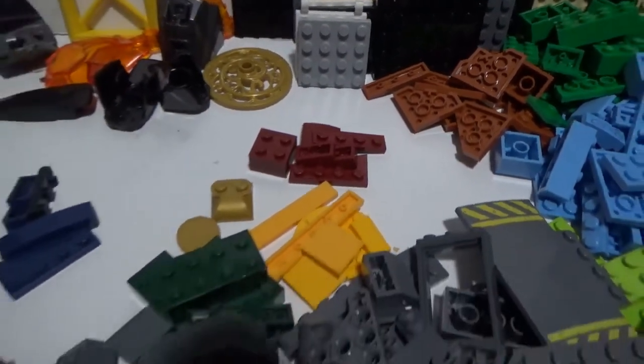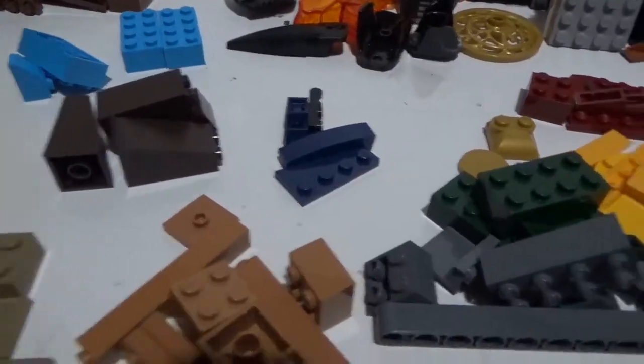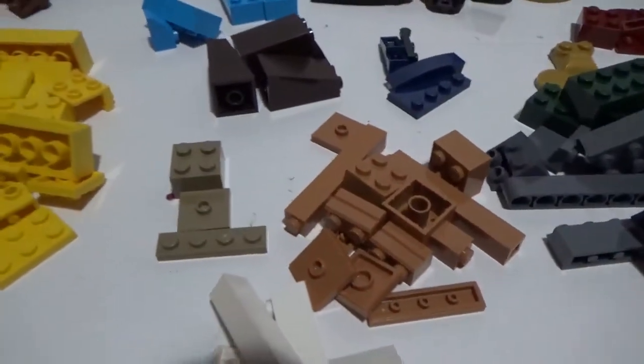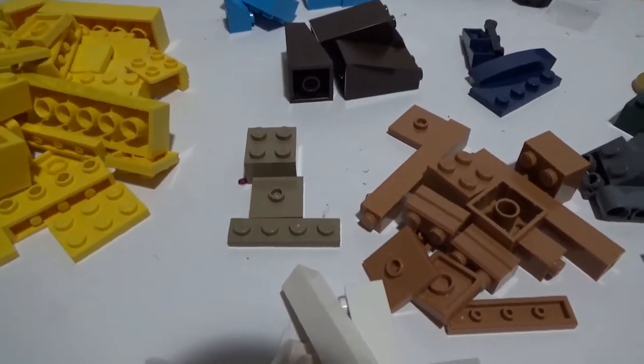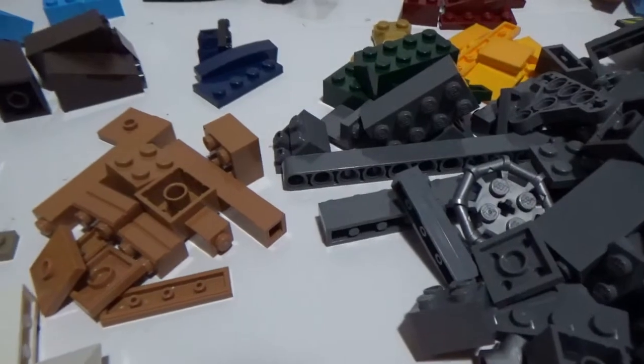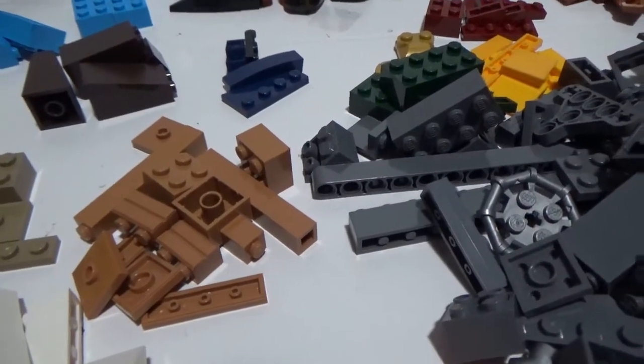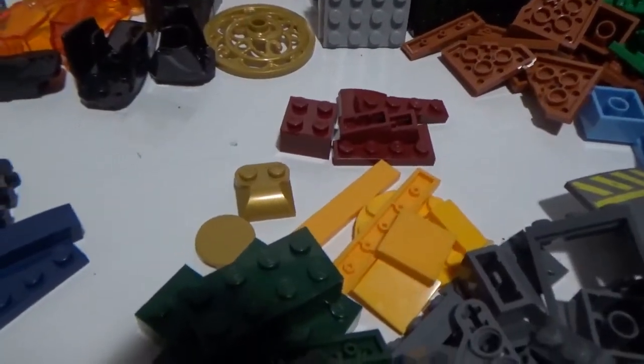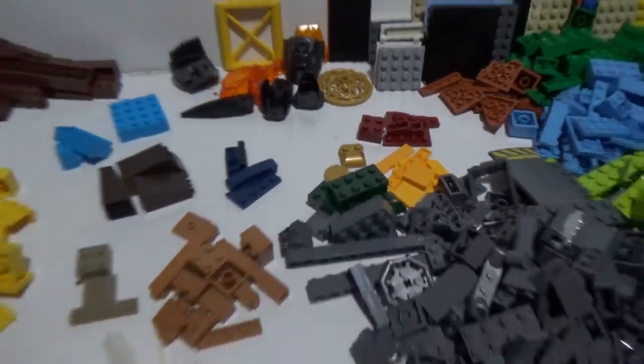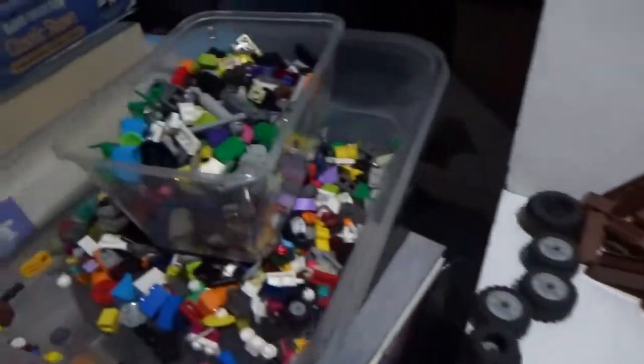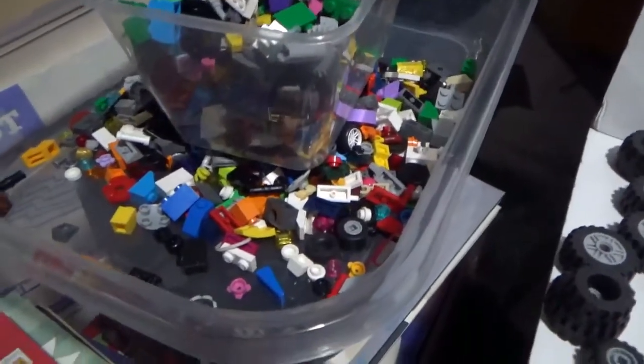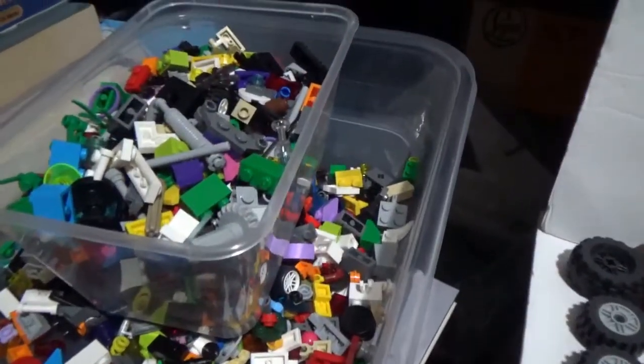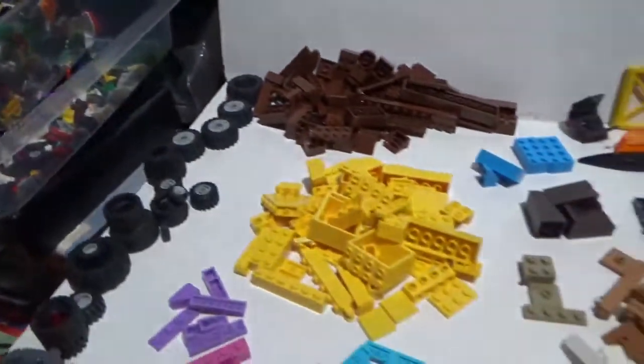These here are dark tan. These here are medium nougat, or dark nougat, one of those two. There's a couple of pearl gold pieces right there. So all in all, pretty good variety. These are all of the small pieces, things that are basically two by two or smaller, and then some specialty things like bars and things like that and minifigure accessories.